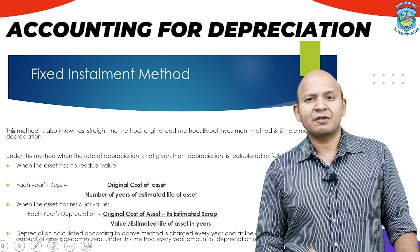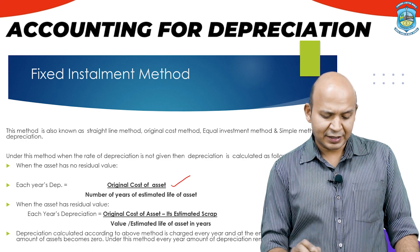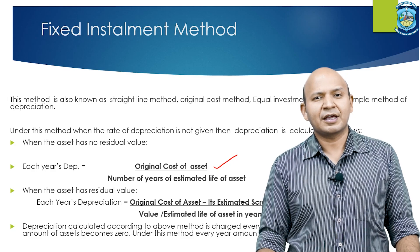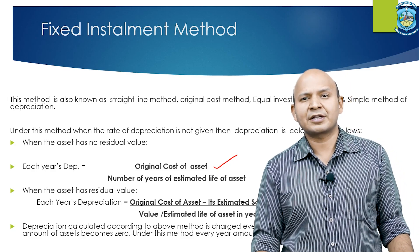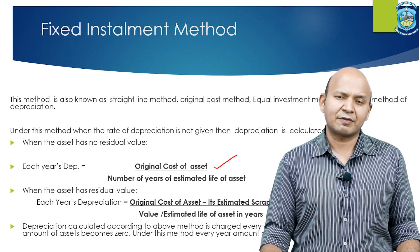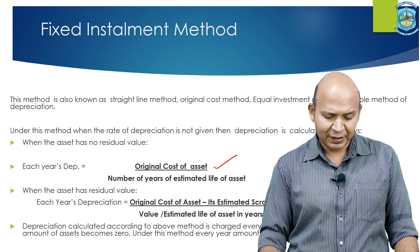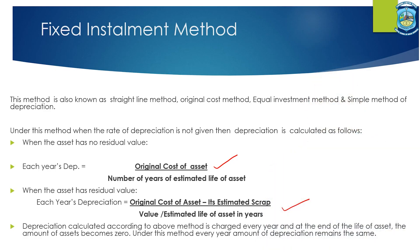Each year's depreciation equals the original cost of the asset divided by the estimated life of the asset. In case the scrap value — also termed as breakup value, residual value, or salvage value — is given, the formula becomes: original cost minus scrap value, divided by the estimated life of the asset. Depreciation is always charged on the last date of each year, and it is a non-cash expenditure recorded on the debit side of the profit and loss statement.